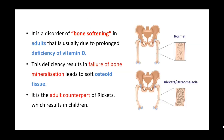Osteomalacia is a disorder of bone softening in adults and is the adult counterpart of rickets. It is due to prolonged deficiency of vitamin D, causing failure of bone mineralization. Due to decreased absorption of calcium and phosphate, the osteoid tissue remains soft — osteoid is a protein released by osteoblasts that normally gets mineralized when calcium deposits on it, but deficiency prevents this.